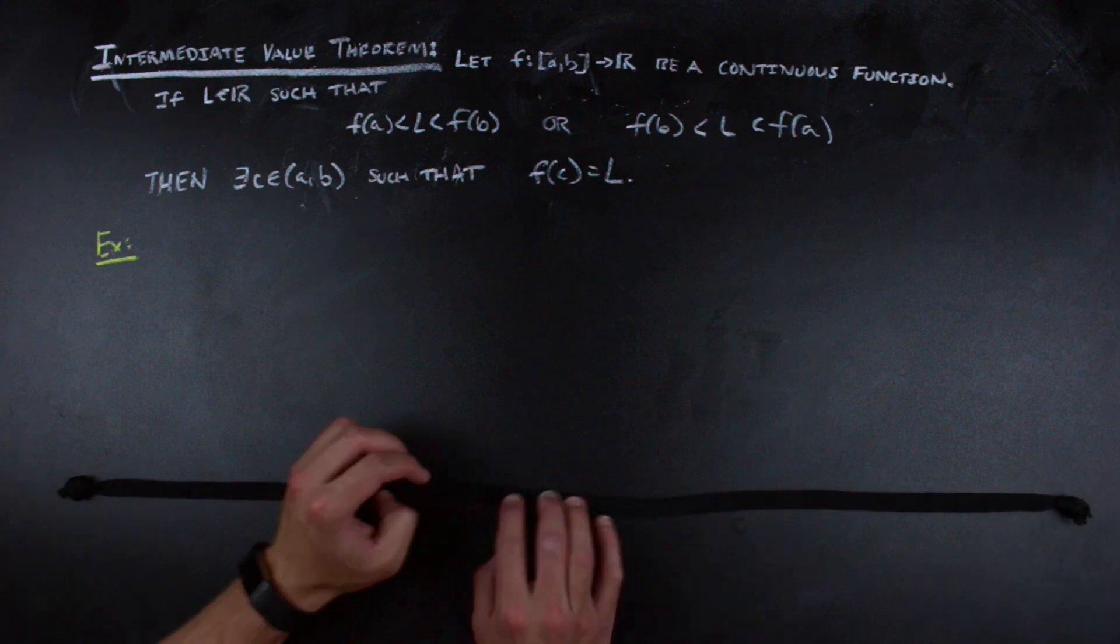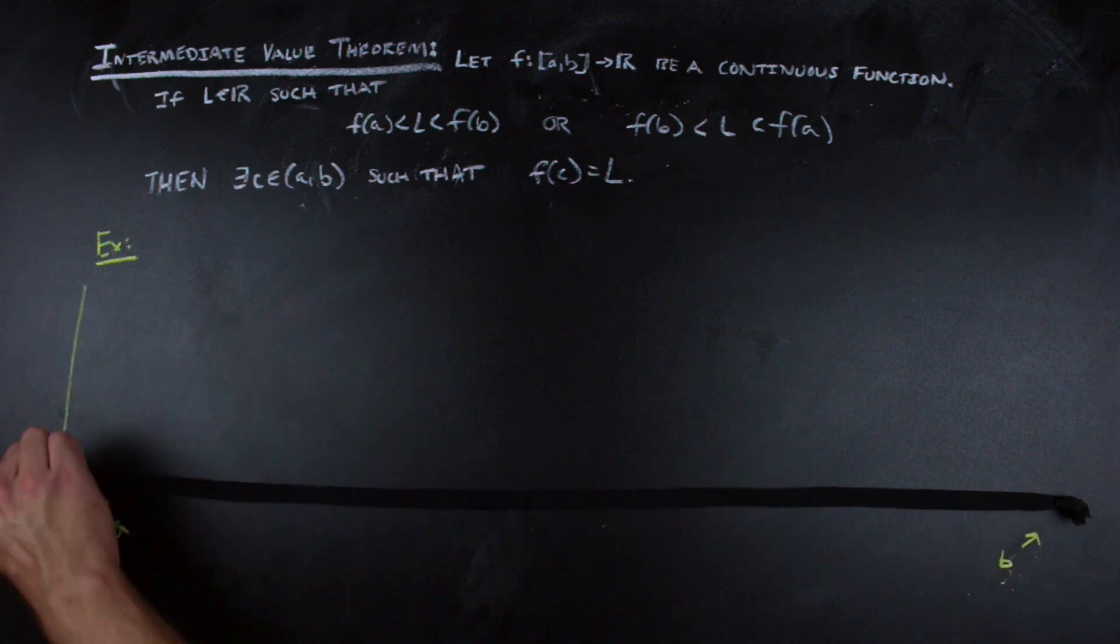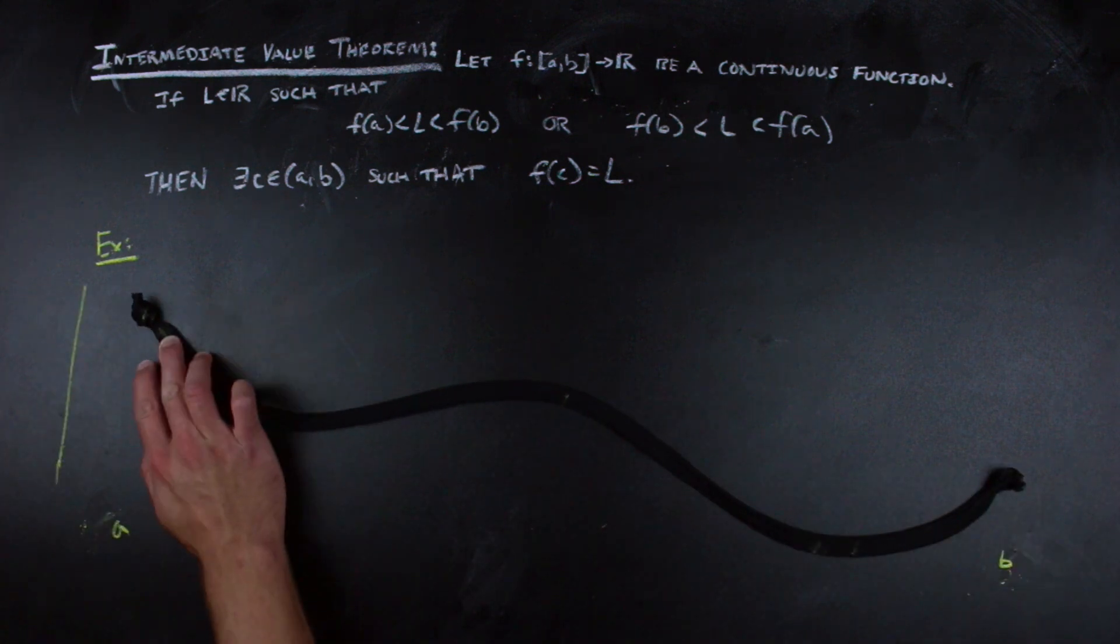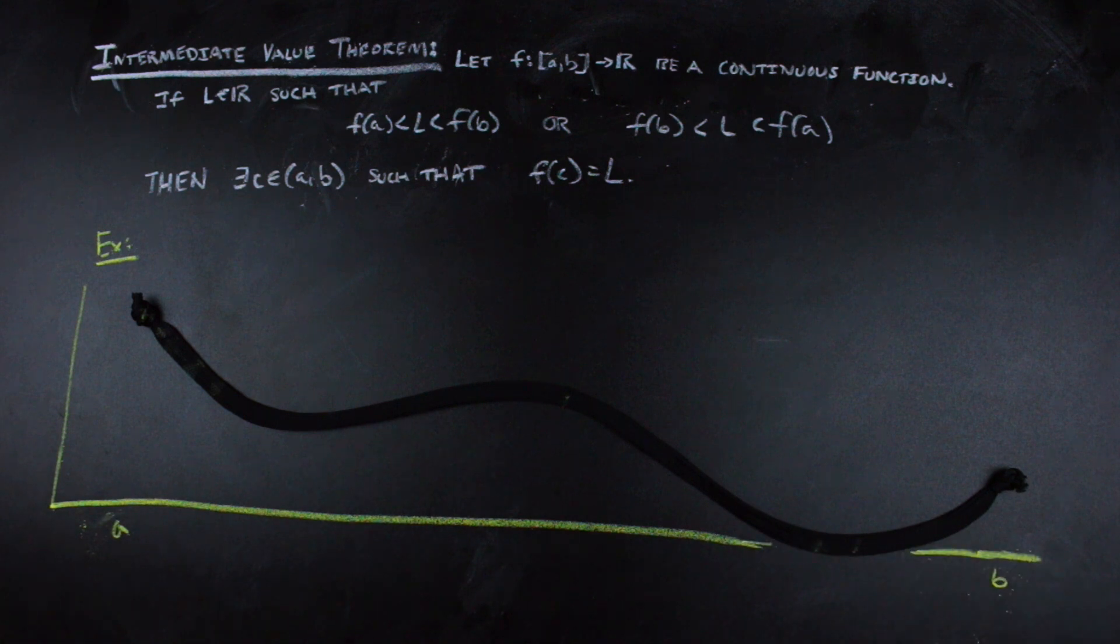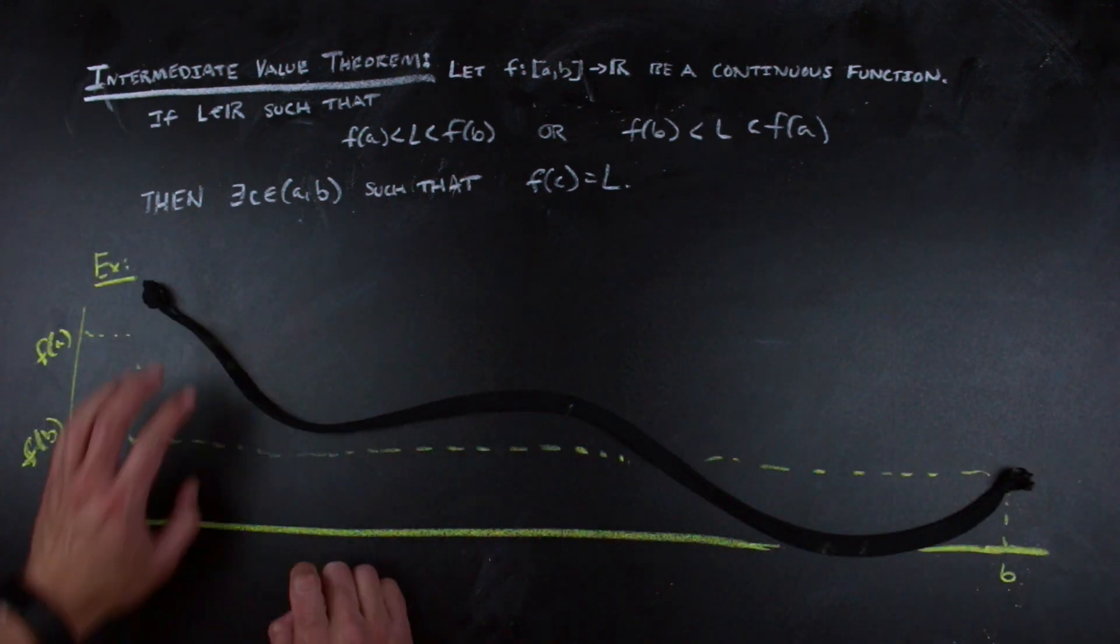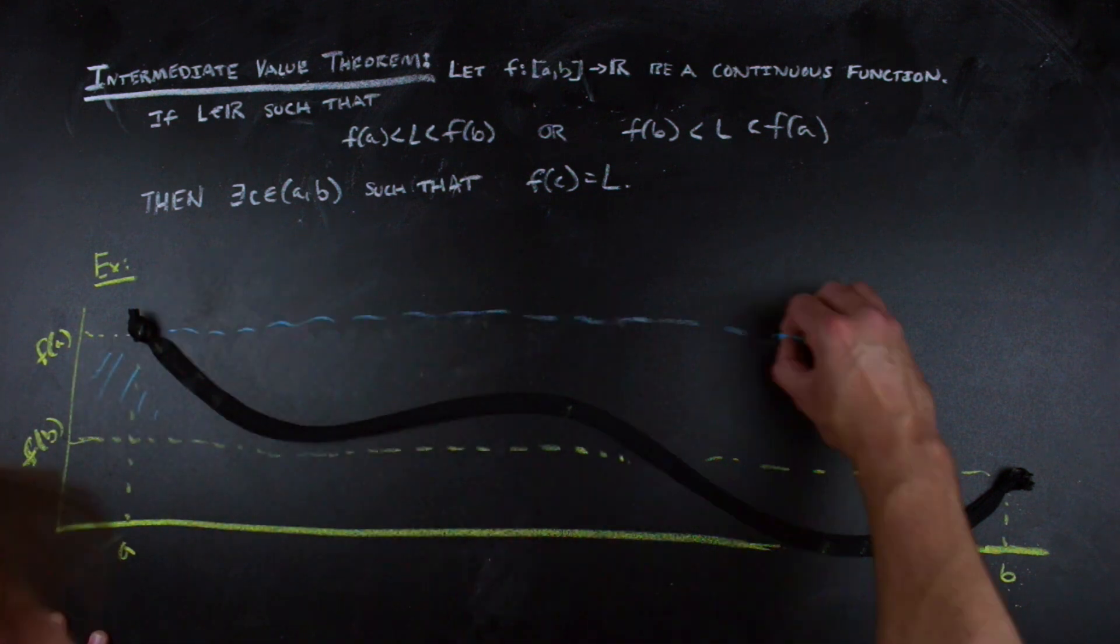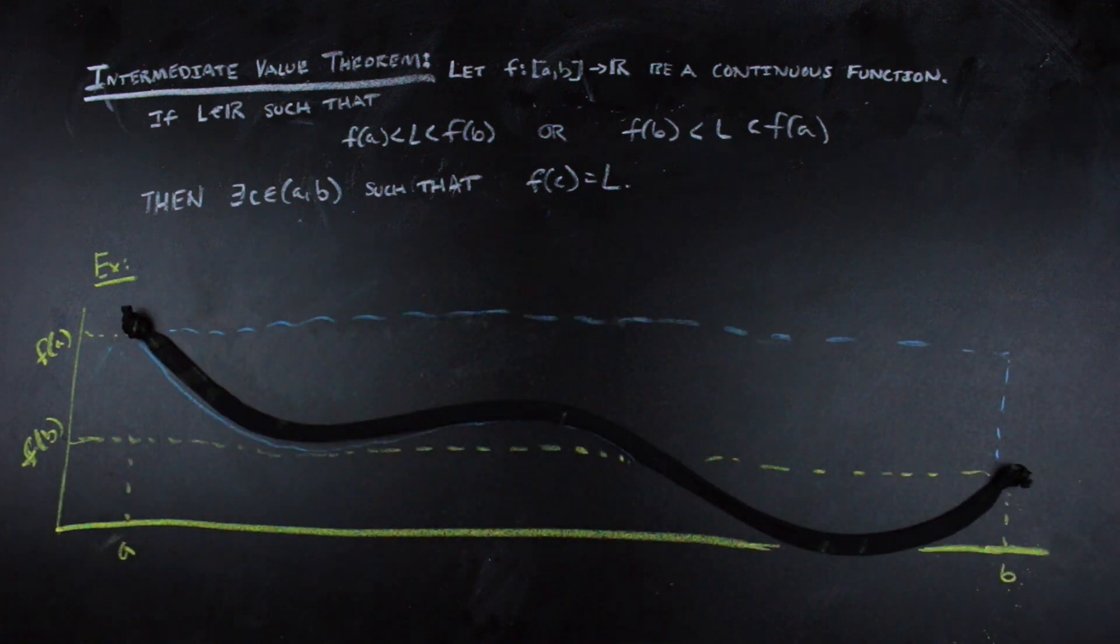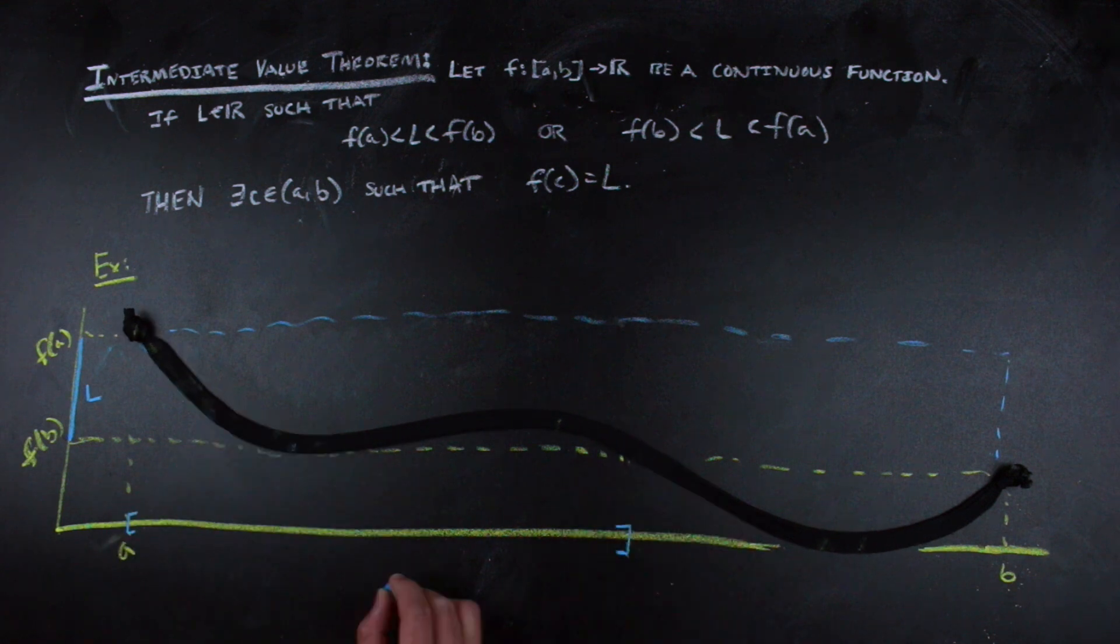To illustrate this, let's take this shoelace, for example. It's our interval. And if we go ahead and apply some function to it by bending it, we get a curve. And on that curve, we can see that all of the values between the endpoints occur somewhere along the interior of the shoelace. And there you go.